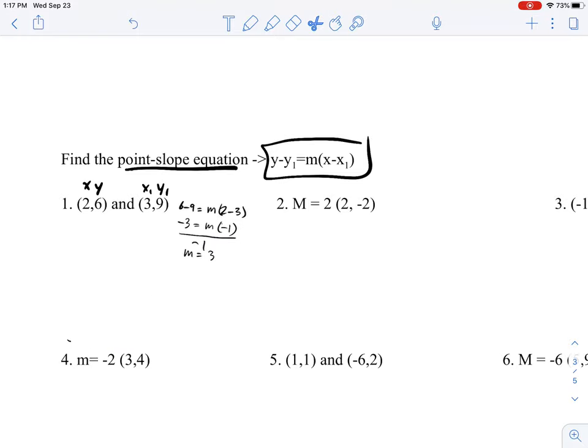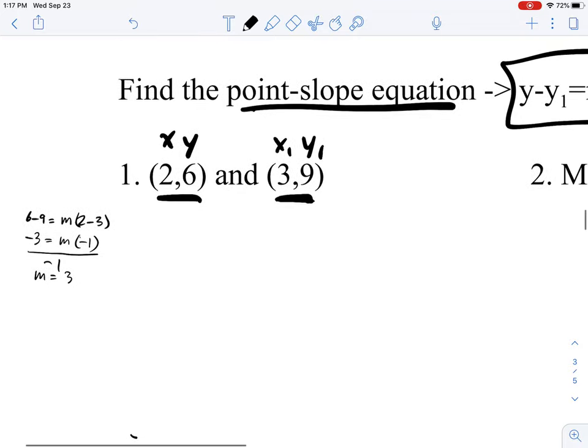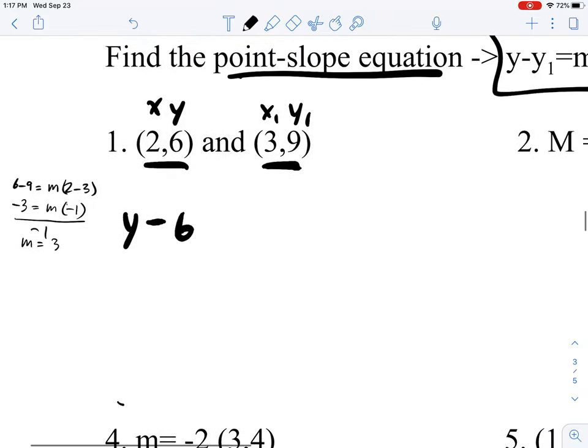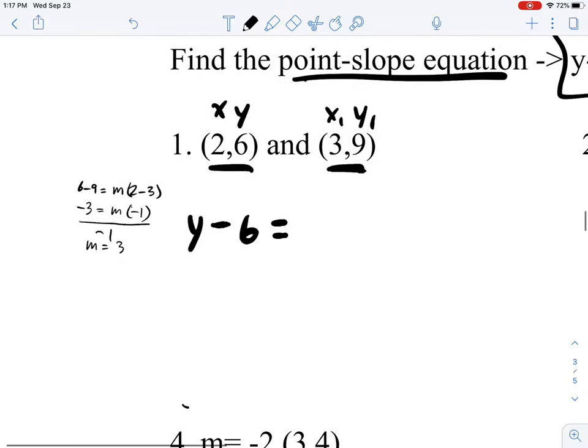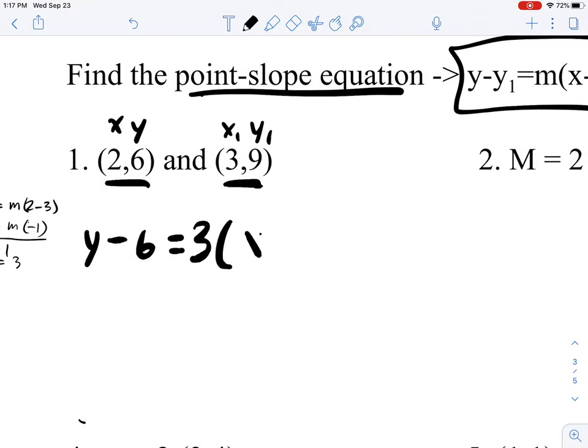So if we put it back into the point-slope equation using one of these points, we can define this equation. y minus 6 equals 3, because that's our slope, times x minus 2.